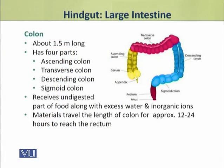Dear students, the colon part of the large intestine is the longest part. It is about 1.5 meters long in humans. It has four parts, which are called the ascending colon, transverse colon, descending colon, and sigmoid colon. The large intestine receives the undigested part of food along with excess water and inorganic ions.